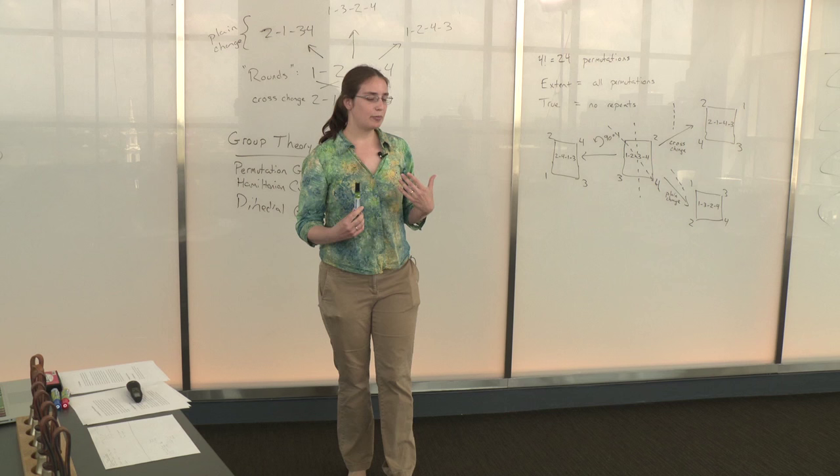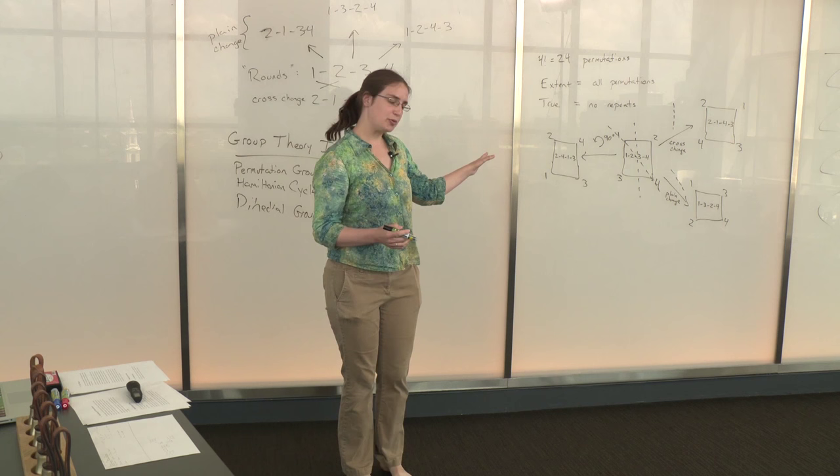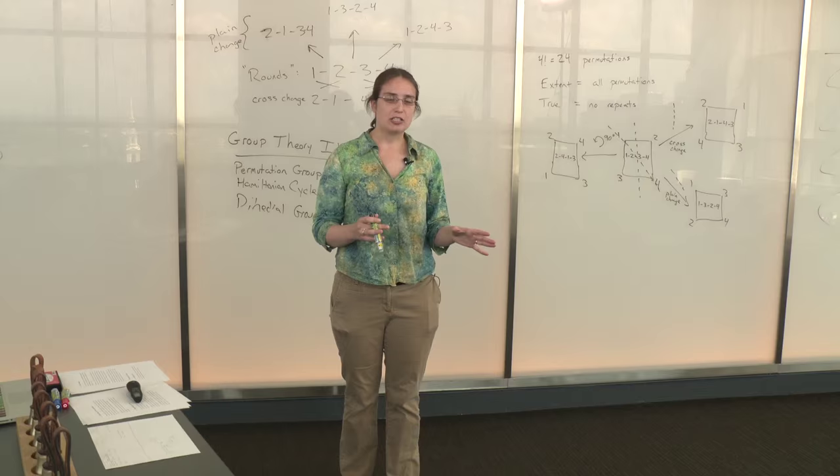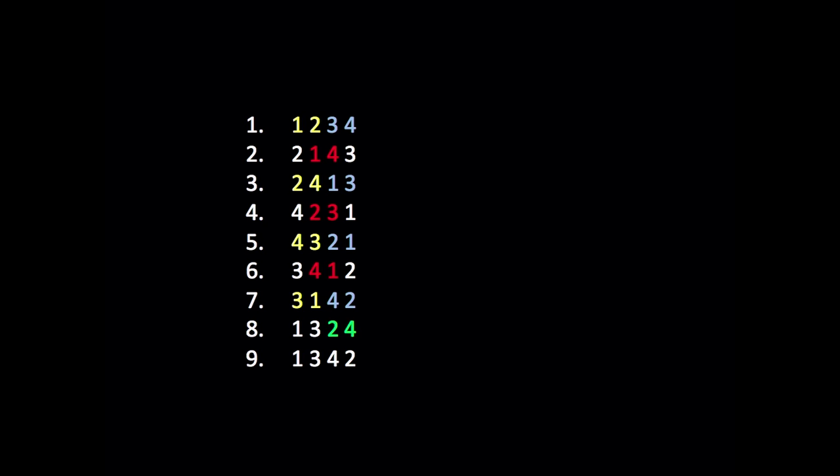By ringing plain hunt we have this very nice group structure but we only got eight different changes, eight different permutations out of the possible 24. Is there some way we can get back the other 16 that we're missing? And so what we're going to do is at the very end there, instead of swapping the middle two bells and coming back to rounds, we're going to make a slight change. We're going to swap instead the last two bells, the two and the four.